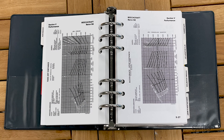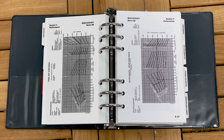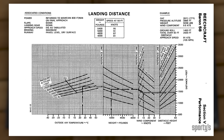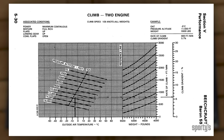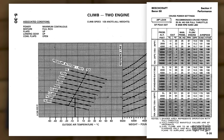Looking through the POH for your airplane, you will see a number of familiar performance charts. There will be graphs, charts, or tables for takeoff and landing distances, normal climb performance, performance in normal cruise, range, and endurance, and others that you've seen before. We won't spend any time on these here, but you should use many of them during your training.